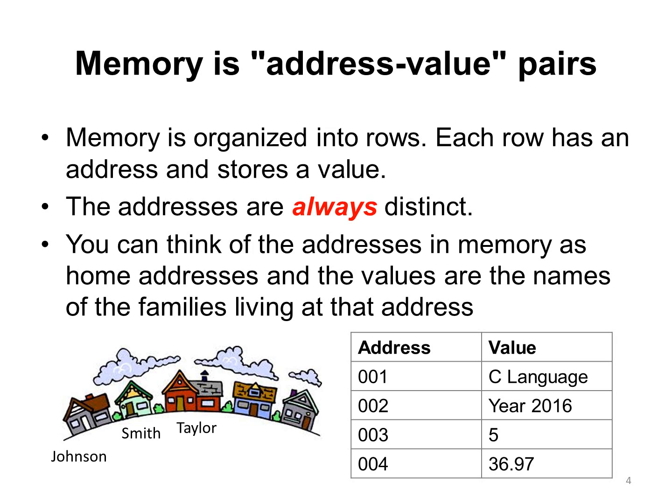For example, along a street, the first house lives the family of Johnson, the second address belongs to the family of Smith, the third address is for the family of Taylor. A computer's memory is organized in a similar way. Each unit of memory is an address and at that address stores some information. The operating system guarantees that two pieces of information have different addresses.